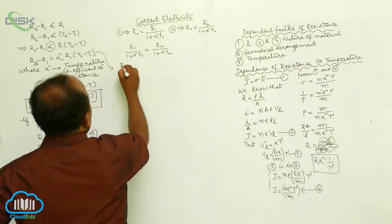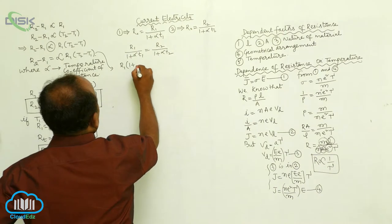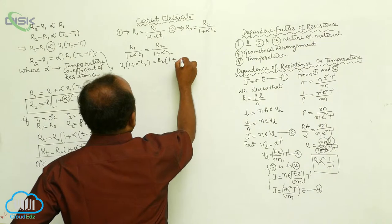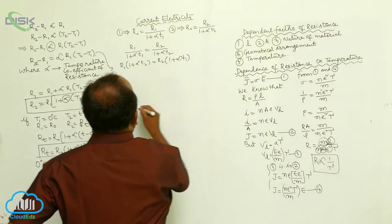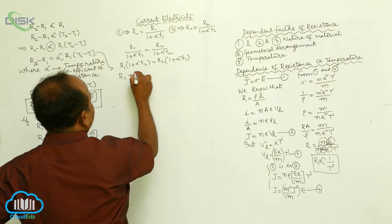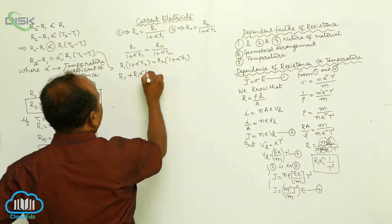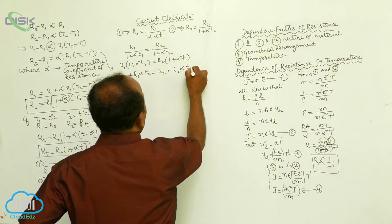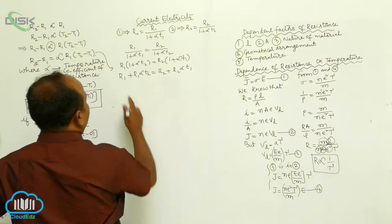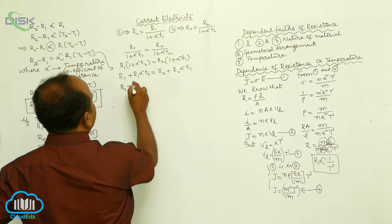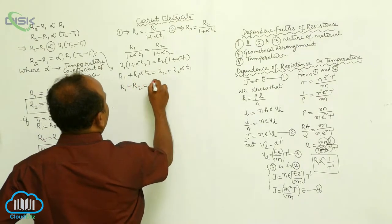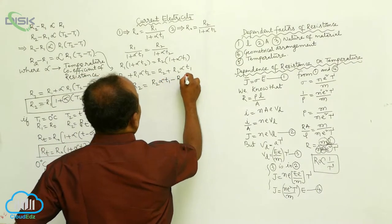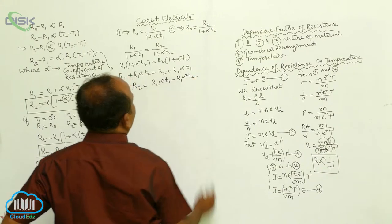On cross multiplication, R1 into one plus alpha T2 is equals to R2 into one plus alpha T1. Therefore, R1 plus R1 alpha T2 is equals to R2 plus R2 into alpha into T1.